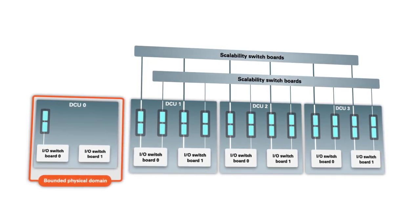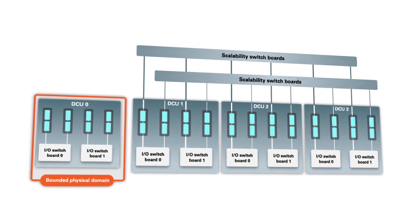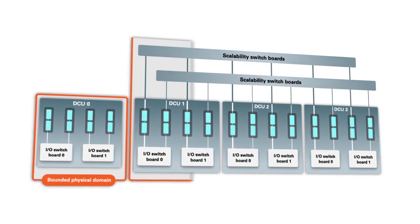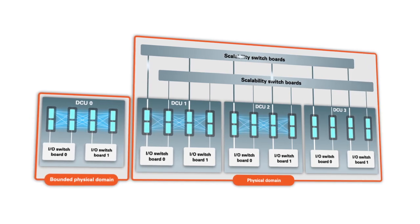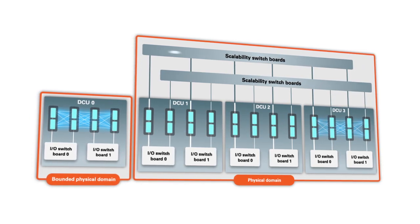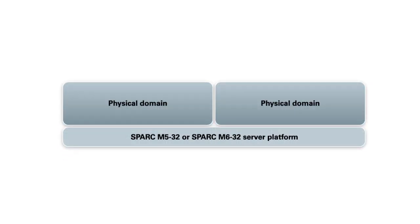Bounded physical domains are limited to a single DCU, so you cannot combine two or more DCUs to make a larger bounded physical domain. A single server can contain a mix of bounded and regular physical domains. Physical domains enable you to isolate specified hardware from other hardware in the system.